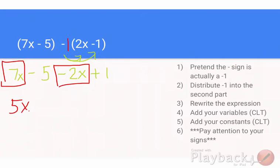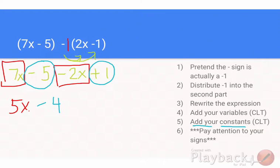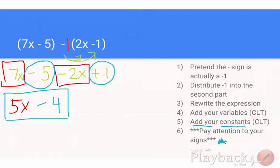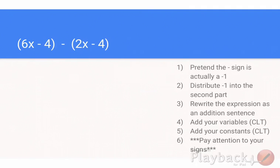Now I'm going to combine my constants. Negative 5 plus 1 gives me negative 4. So my final expression is 5x minus 4. Just make sure you pay attention to your signs — this is 7x plus negative 2x, and this is negative 5 plus positive 1.